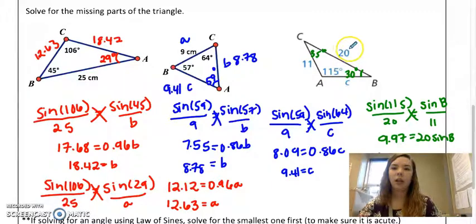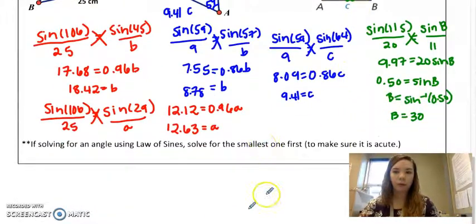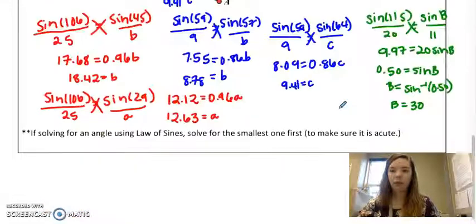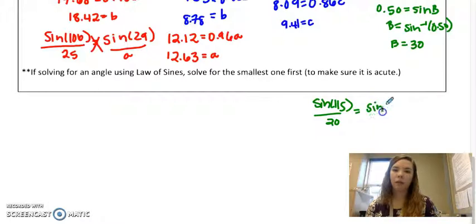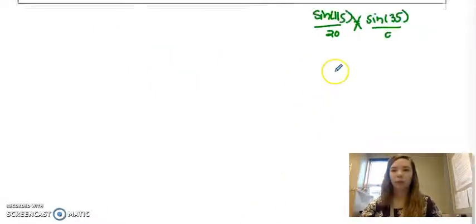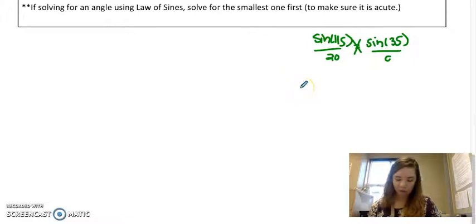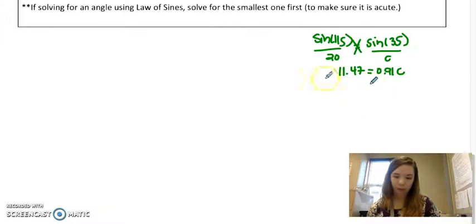And then I still have to find c. So I would do sine of 115 over 20 just like before, and then I have sine of 35, my new angle, over c. So that would be 11.47 equals 0.91c. And then you can just divide, so 12.60 equals c.